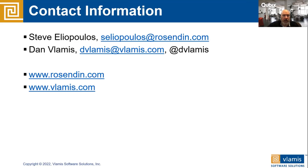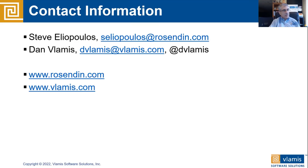Second question: why not use the online data modelers that are part of OAC? We think of it as the thin client modeler. With Rosendin, they had a huge investment in the RPD file brought over from OBIEE - and you can't mix and match those. That's why not the thin client modeler - because their legacy RPD was brought over from OBIEE.